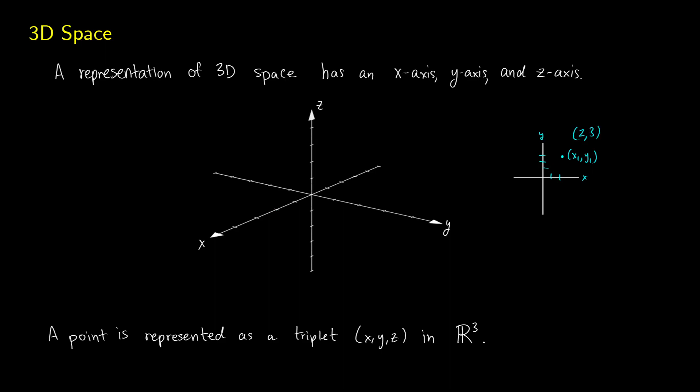In three-dimensional space, we use the same convention for drawing a third axis. You can stick your right arm in front of you — the arm acts as the y-axis. If you curl your fingers towards you, that would be the x-axis, and then your thumb pointing up is the direction of the z-axis.